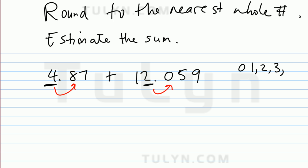Zero, one, two, three, four rounds down. Five, six, seven, eight, nine rounds up.